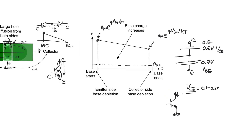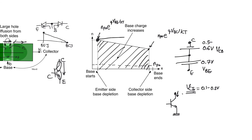There is one important thing about a BJT in saturation: there is a lot of electron charge in the Base. This excess charge does two things. First, the difference between the electron level at the Collector and the level at the Emitter represents the electrons that recombine within the Base, which gives us the Base current. Additionally, the charge that is not lost in the middle is stored within the Base — this is the total charge stored in the Base when the BJT is in saturation. If we need to move the BJT out of saturation, we first have to get rid of this excess stored charge within the Base.